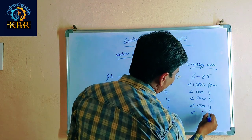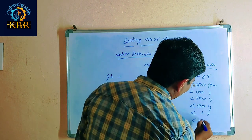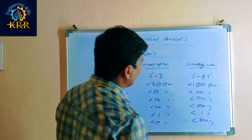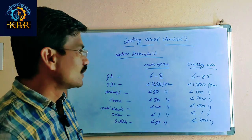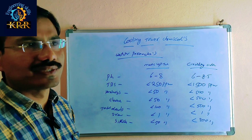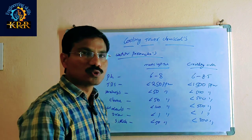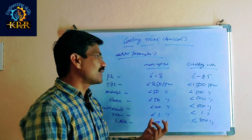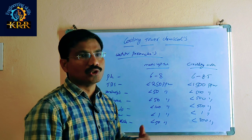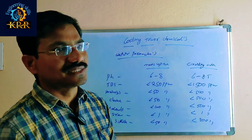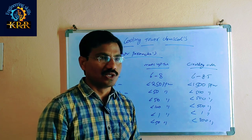For silicon: less than 50 ppm in makeup and less than 200 ppm in circulation. These water parameters should be maintained to standard values. If these parameters are not maintained, you will face problems in the condenser and evaporator.